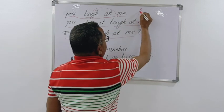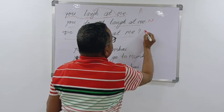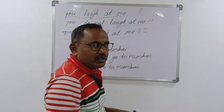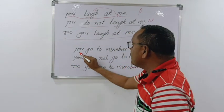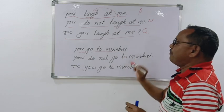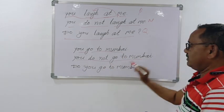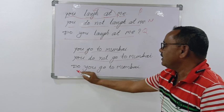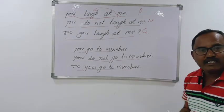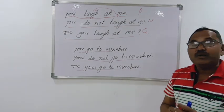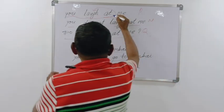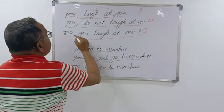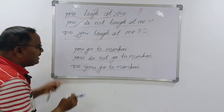You laugh at me - this is the positive sentence. You do not laugh at me - negative. Do you laugh at me? - interrogative. You can say interrogative or question. For example: You go to Mumbai. You do not go to Mumbai. Do you go to Mumbai? Like this you make the sentences - positive, negative, interrogative.